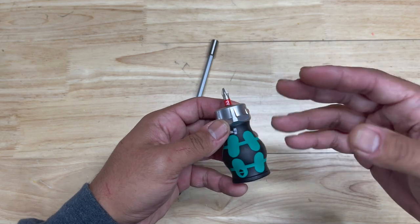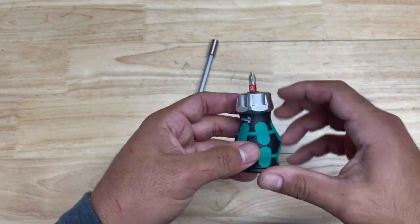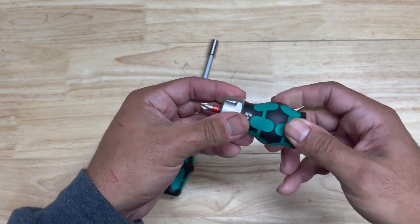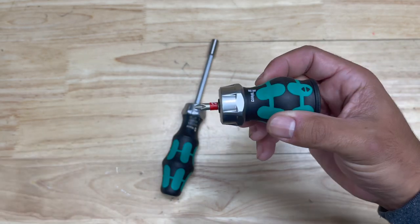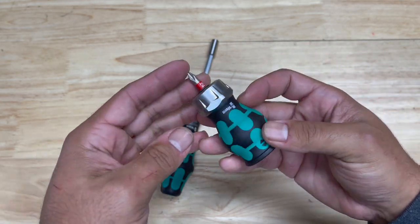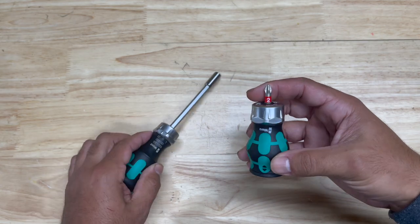However it looks like they went with the same ratcheting mechanism and obviously the same selector switch. Now I really do feel like the stubby is more refined than the KK27.